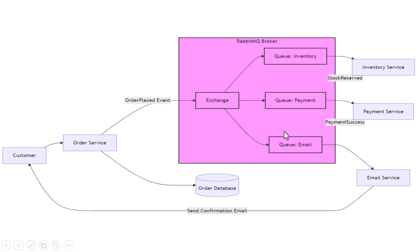So now, instead of calling other services directly, the order service just sends one message — like "order placed" — to an exchange. That exchange receives the message and decides which queues to send it to: maybe one for inventory, one for payment, one for email. Each message sits safely in its queue until the right service is ready to process it. Let's walk through a full example using RabbitMQ and an exchange.